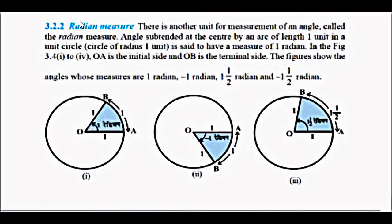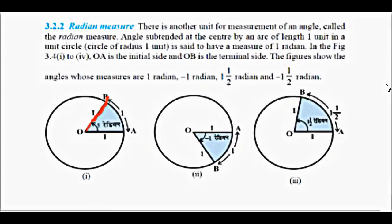Now the radian measure. There is another method or way of measurement of an angle which is called the radian measure. The angle subtended at the center of a circle by an arc of length 1 unit in a circle of radius 1 unit is 1 radian. Where OA is the initial side and OB is the terminal side. So we say 1 radian is the angle subtended. We will talk in terms of the angle.